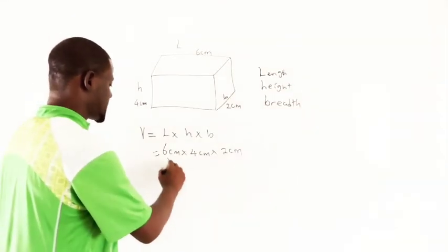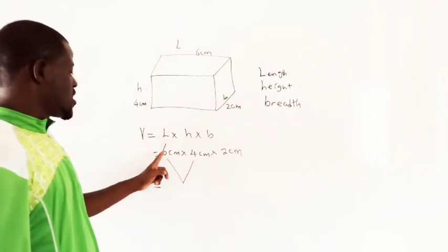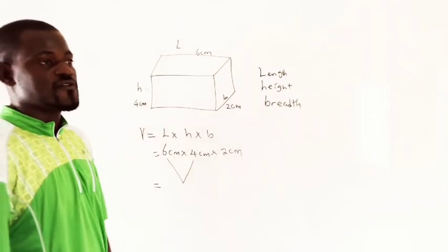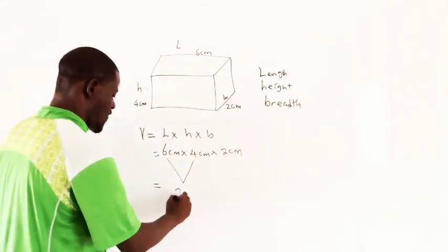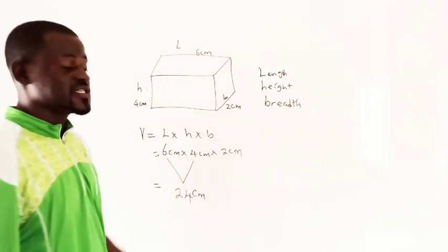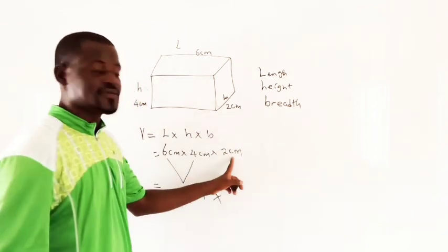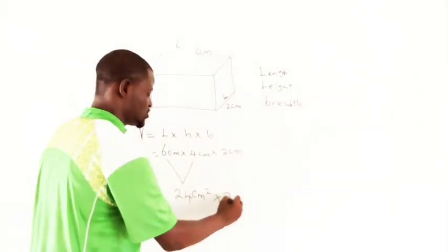So we will multiply. Take 2 at a time. 6 times 4 is 24. We have cm and cm here. That is, cm times cm will give you square cm, times this, 2 cm.